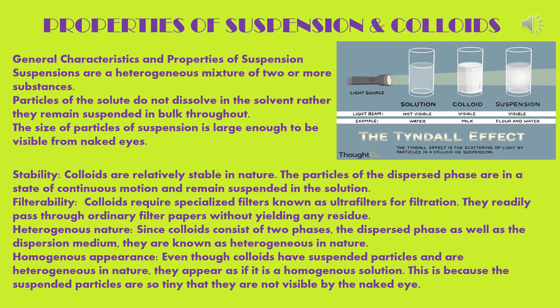General characteristics and properties of suspension: it is a heterogeneous mixture of two or more substances. Particles of the solute do not dissolve in the solvent but remain suspended throughout. The size of particles is large enough to be visible to the naked eye. The size of suspended particles is nearly 10⁻⁴ centimeter, or 10⁻⁶ meter. Particles of a suspension have a tendency to settle down when left undisturbed — there is a tendency of precipitation. Particles can be separated by filtration.